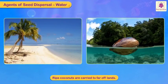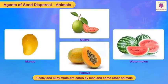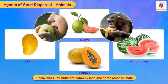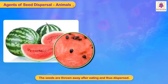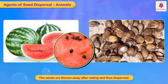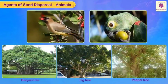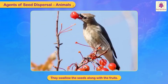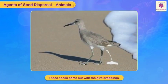Fleshy and juicy fruits like mango, guava, watermelon, and papaya are eaten by humans and some other animals. The seeds are thrown away after eating and thus dispersed. Birds eat the fruits of banyan, fig, and peepal trees. They swallow the seeds along with the fruits, and these seeds come out with the bird droppings.